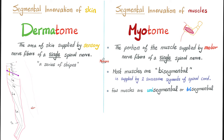The myotome is the portion of the muscle supplied by the motor nerve fiber of a single spinal nerve. Most muscles are supplied by two segments of the spinal cord — they are bi-segmental. For example, the biceps is supplied by C5 and C6. The triceps is supplied by C7 and C8. Few muscles are unisegmental or trisegmental. Notice that these are two successive segments in each case.